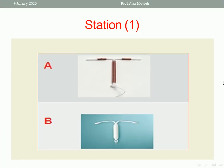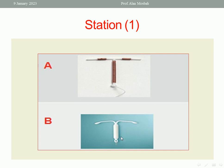Let us start with station one. Please look at this picture. What is shown in picture A and B? Picture A is the Copper-T IUD 380. Picture B is the Levonorgestrel-releasing intrauterine system — for example, Mirena.